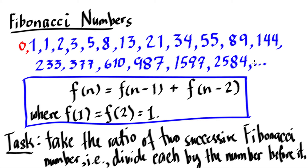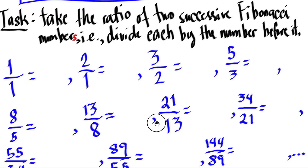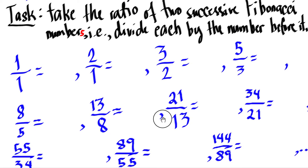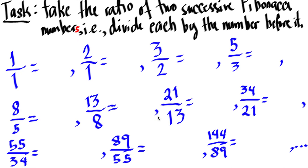Now we will have a little task in this video. What we're going to do is take the ratio of two successive Fibonacci numbers — that is, divide each number by the number before it. So for instance, we're going to divide 1 divided by 1, 2 divided by 1, 3 divided by 2, 5 divided by 3, and so on. You may want to use your calculators — it will be very handy to have those.